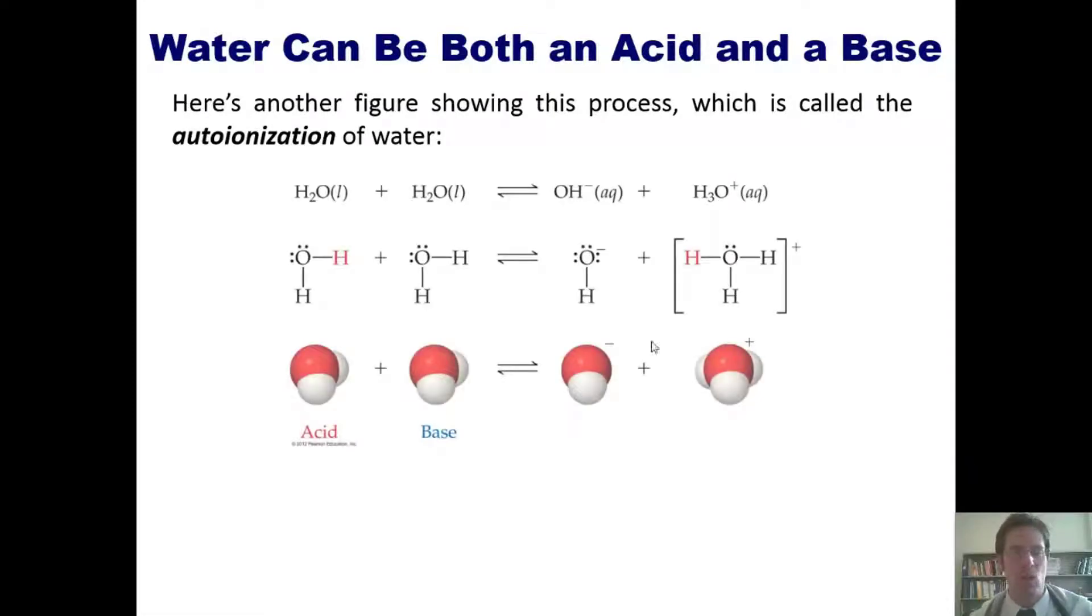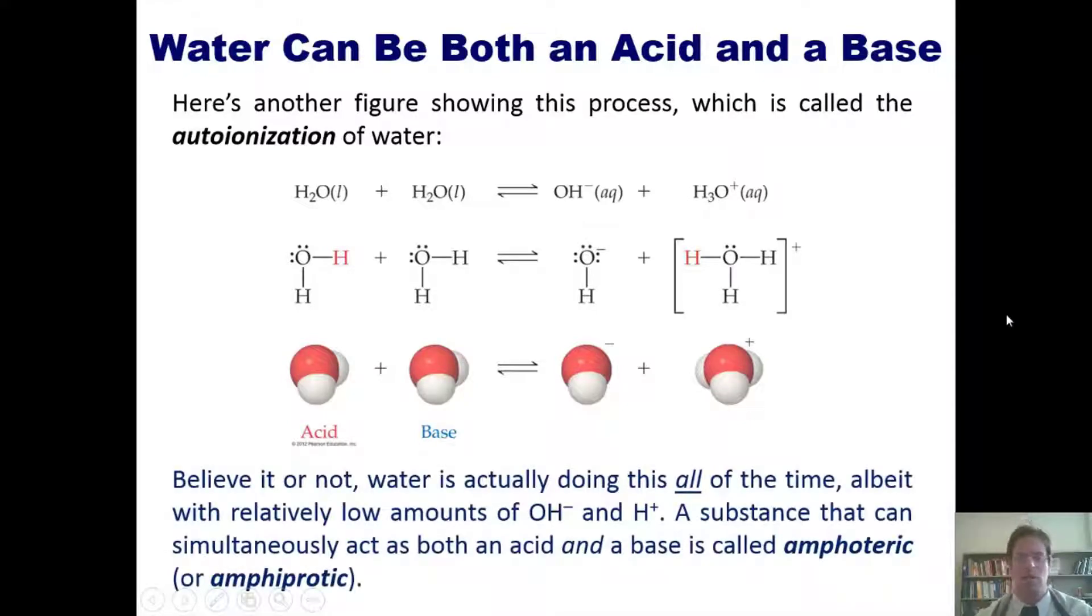Here's another figure showing this process, which is called the autoionization of water. We can imagine pictorially this water molecule giving up its hydrogen to its neighbor. The neighbor then becomes hydronium H3O+ and leaves hydroxide behind. Once again, this water molecule is the acid because it gave up a hydrogen, while this water molecule is the base because it accepted the hydrogen.